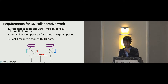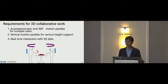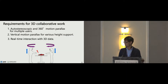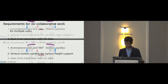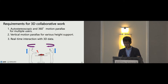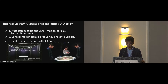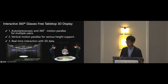For this purpose, there are some requirements. First is auto-stereoscopic and 360-degree motion parallax for multiple users. The key point is with no wearable devices like 3D glasses or head-mount displays, because maintaining eye contact and face-to-face communication in collaborative work is very important. Second, we need vertical motion parallax for various heights, as it is necessary to deal with height differences among multiple users. Finally, real-time interaction with 3D data.